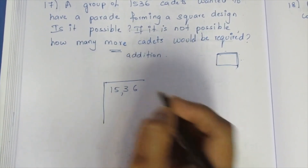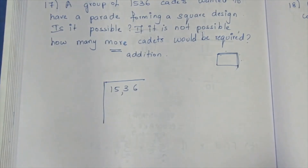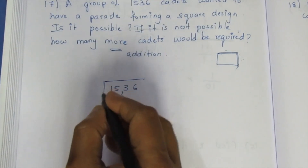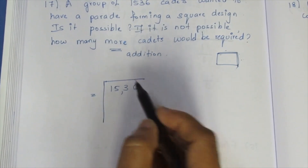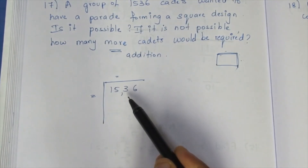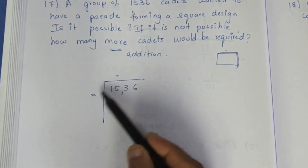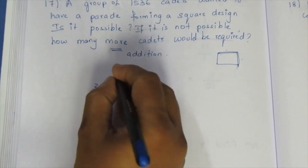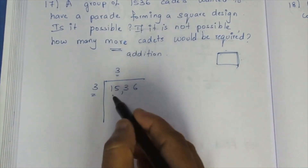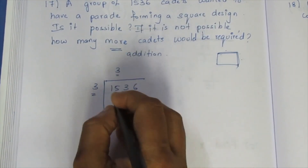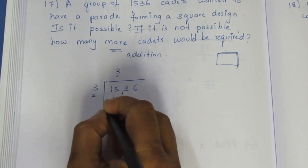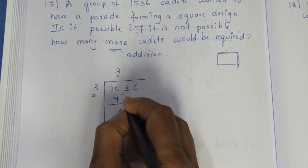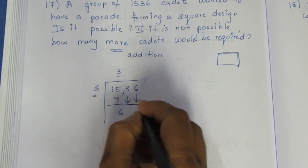Finding the square root of 1536: we pair the digits. Using 3, 4, 6 and 4 — 3 is 9. Subtract 6, we have 2 numbers. So 36.